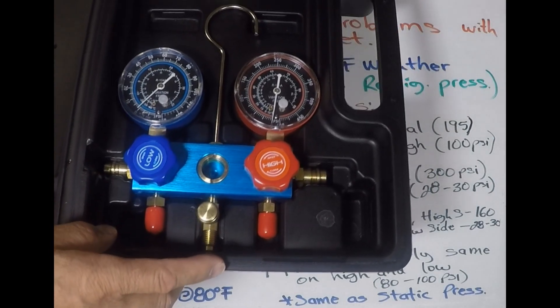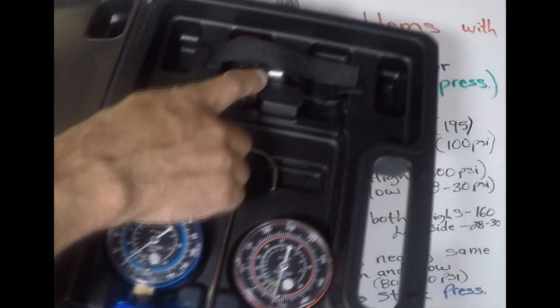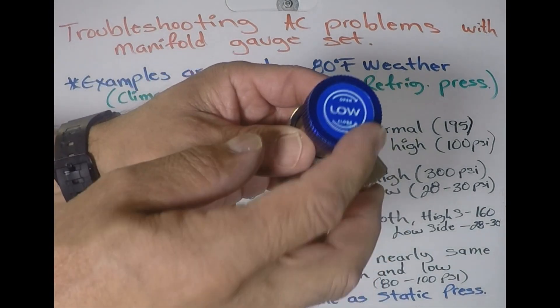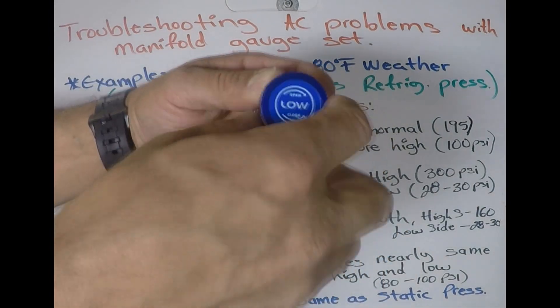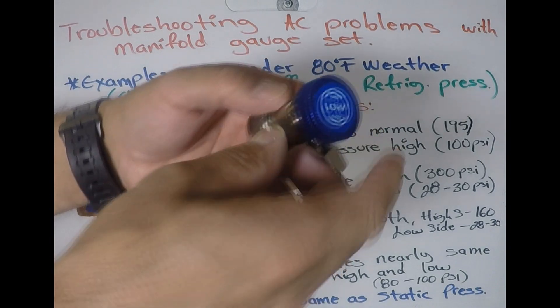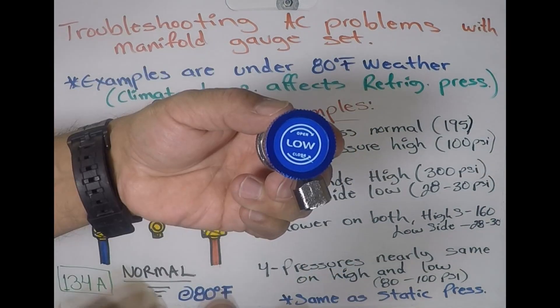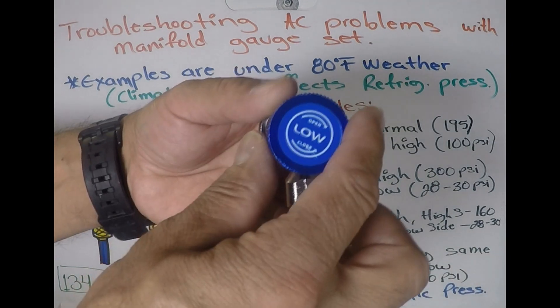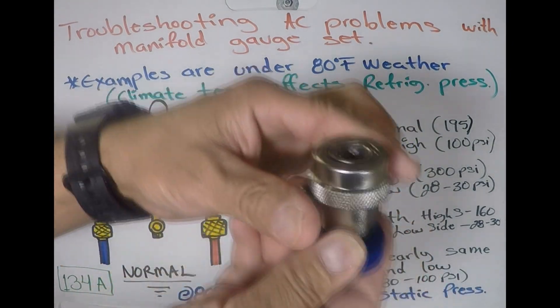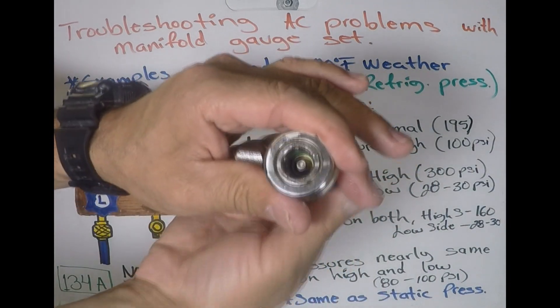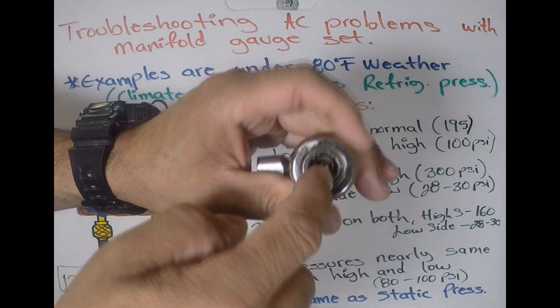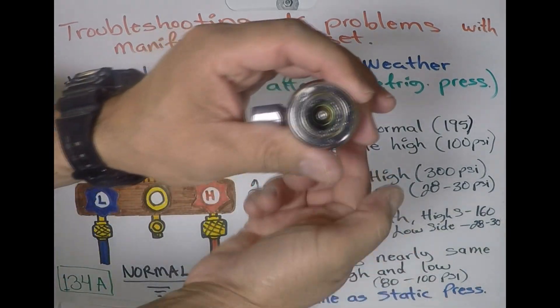Now the other two valves that are going to be connected to the engine, which are going to be these, they open and close differently. To close them, you turn them counterclockwise because the needle moves up. And once you have everything connected and you're ready to do the test, you open them by turning them clockwise.